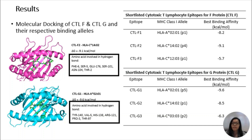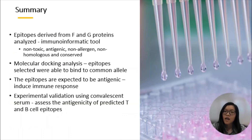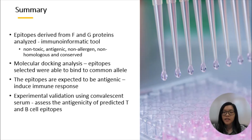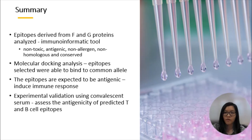The epitopes having the best binding affinity with the HLA molecules will proceed to experimental validation. In summary, epitopes derived from the F and G proteins were successfully identified by immunoinformatics tools. The epitopes were predicted to be non-toxic, antigenic, non-allergen, non-homologous, and conserved, and they show binding interaction with their respective alleles. These epitopes are expected to be antigenic and would induce an immune response. Further experimental validation will be carried out using convalescent serum to assess the antigenicity of the predicted T and B cell epitopes in stimulating the immune response.